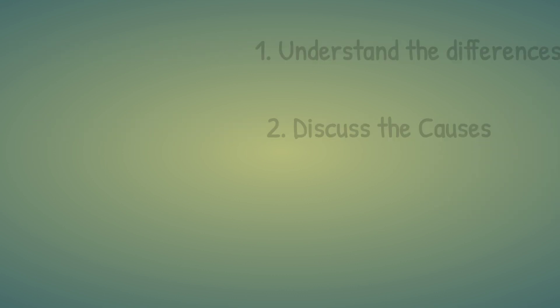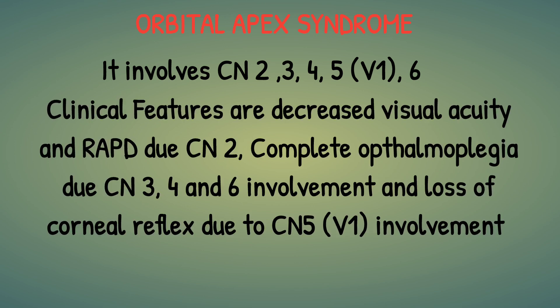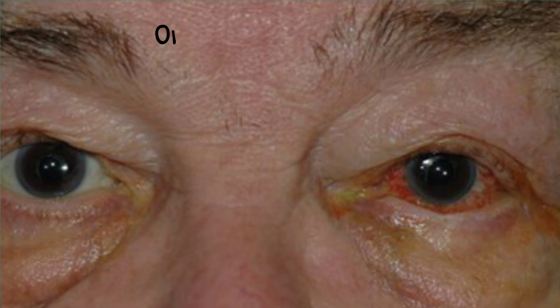Let's start with the first syndrome, which is Orbital Apex syndrome. It involves cranial nerve 2, 3, 4, and 5 — specifically V1, the ophthalmic division — and cranial nerve 6. Based on these cranial nerve involvements, the features are: decreased visual acuity and relative afferent pupillary defect (RAPD) due to cranial nerve 2 involvement; complete ophthalmoplegia due to involvement of cranial nerves 3, 4, and 6 — the eye will not be able to move in any direction; and loss of corneal reflex due to cranial nerve 5 ophthalmic division involvement.